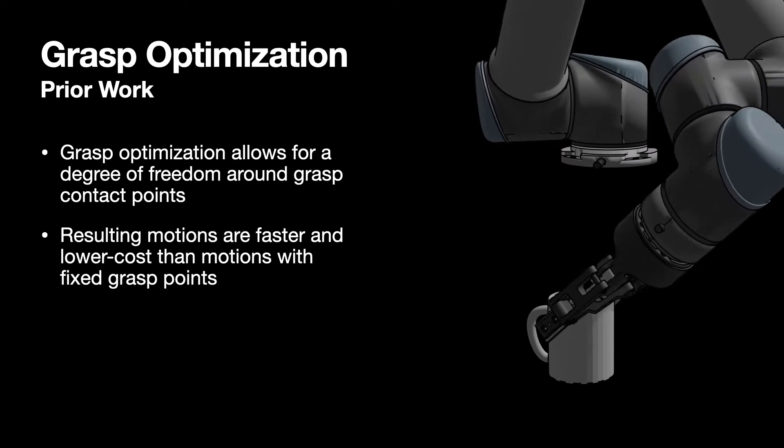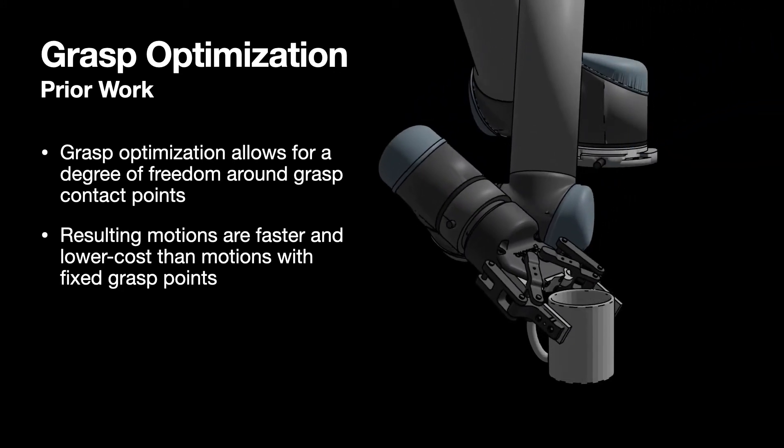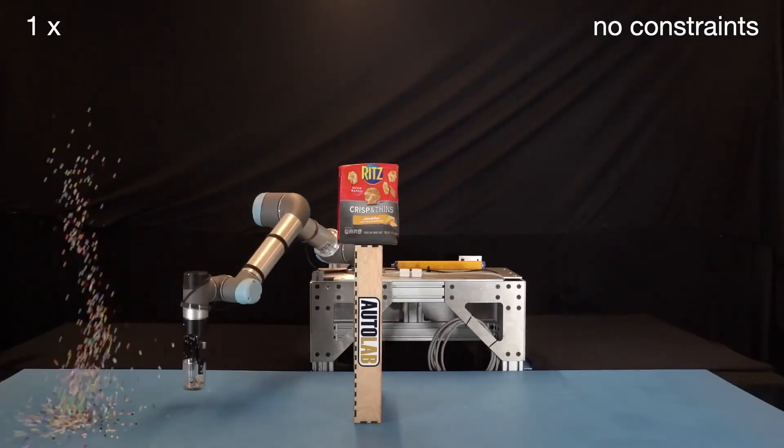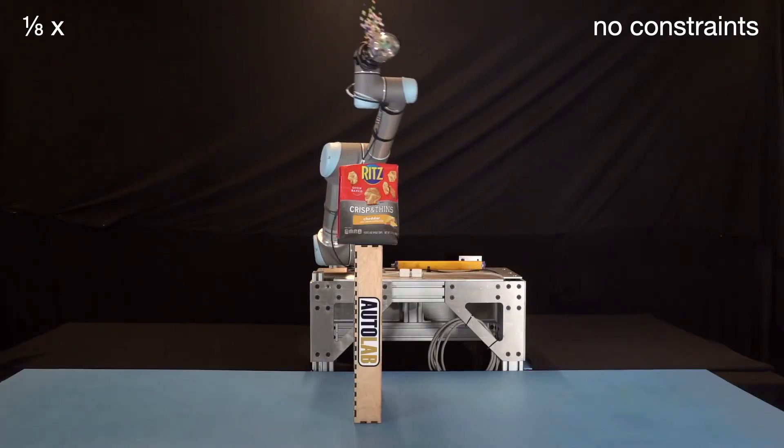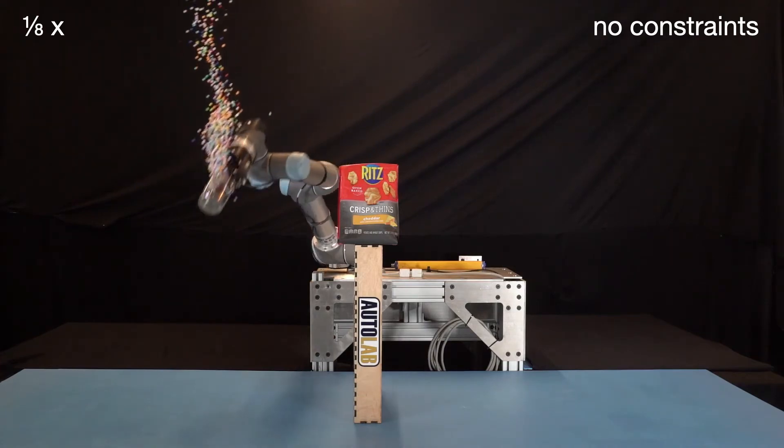meaning it could go faster than time-optimal for fixed pick-and-place points. But moving robot arms fast while transporting something can have negative outcomes, such as spilling contents or breaking fragile objects.